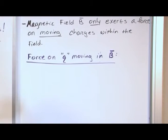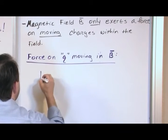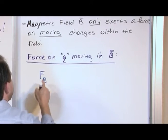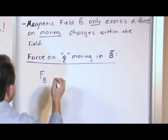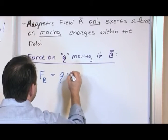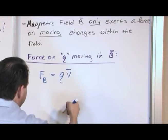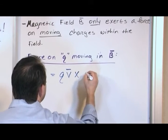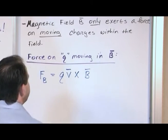That force, we're going to call it F sub B, because it's a force due to the magnetic field B, is equal to the charge times the velocity, it's a vector so I'm going to label it that way, crossed with the magnetic field B.